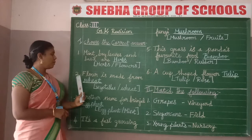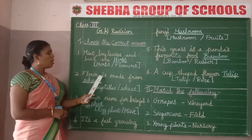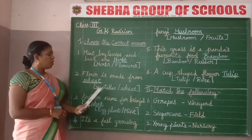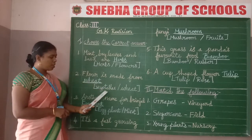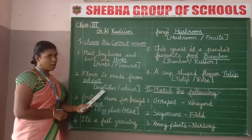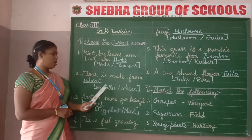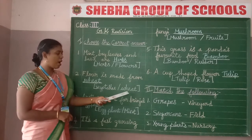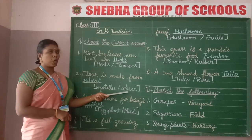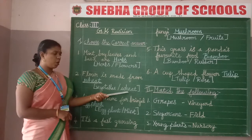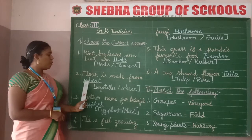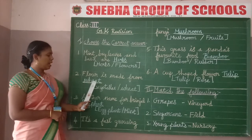Second question: flour is made from wheat. The options given are vegetables and wheat. Vegetables — maav thaiya — that's not possible. So we have to use wheat. Wheat means godume, and godume makes maav — flour. So the correct answer is wheat. Spelling: W-H-E-A-T.